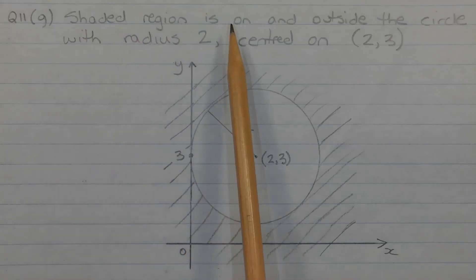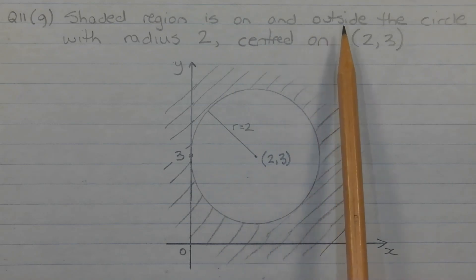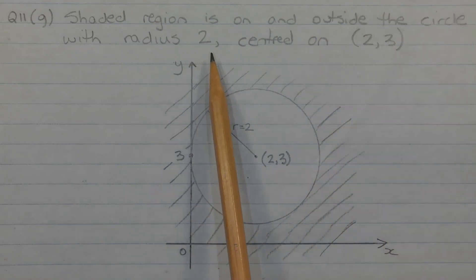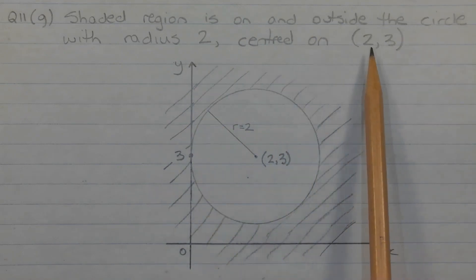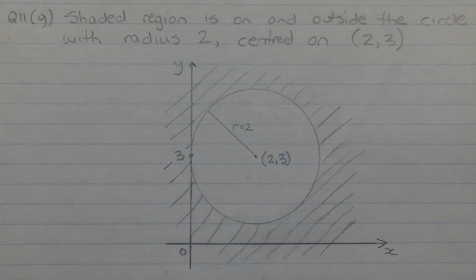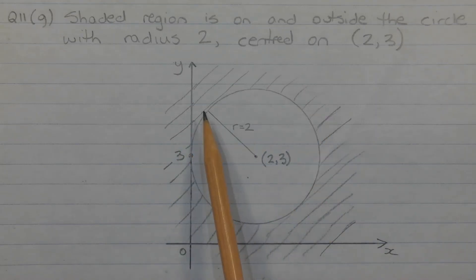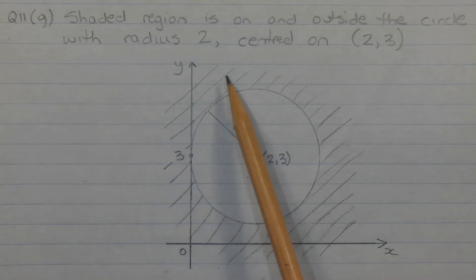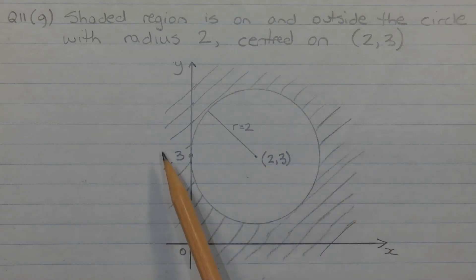The shaded region is on and outside the circle with radius 2 centered on (2, 3). It's important that the circle is drawn with a solid circumference, not a dotted circumference. Here is the sketch: circle radius 2 centered on (2, 3), and the shading is clearly shown on the outside of the circle.